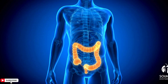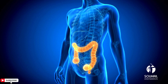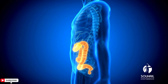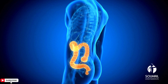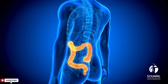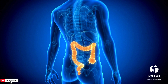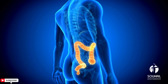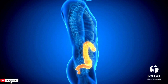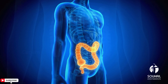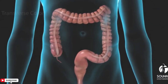Large intestine. Colon. The remaining undigested food passes into the large intestine, where water and electrolytes are absorbed, and the remaining material is formed into feces. Beneficial bacteria in the colon also aid in the digestion of certain substances and produce vitamins like vitamin K and some B vitamins.